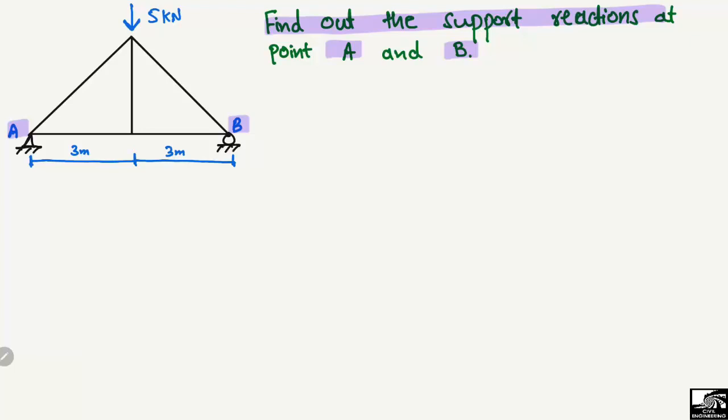There is a concentrated load of 5 kN acting at the mid of the truss structure, which is 3 meters from the left end and 3 meters from the right end. So the total span or length of the truss is 6 meters.